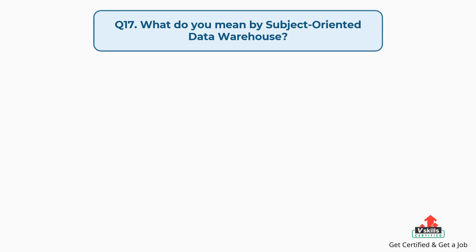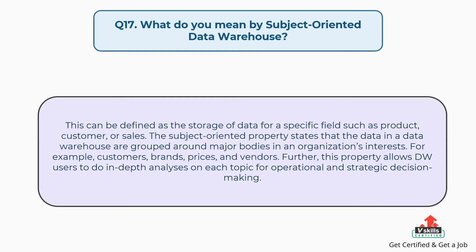Question number seventeen: What do you mean by subject-oriented data warehouse? This can be defined as the storage of data for a specific field such as product, customer, or sales. The subject-oriented property states that the data in a data warehouse are grouped around major bodies in an organization's interests — for example, customers, brands, prices, and vendors. This property allows data warehouse users to do in-depth analyses on each topic for operational and strategic decision-making.